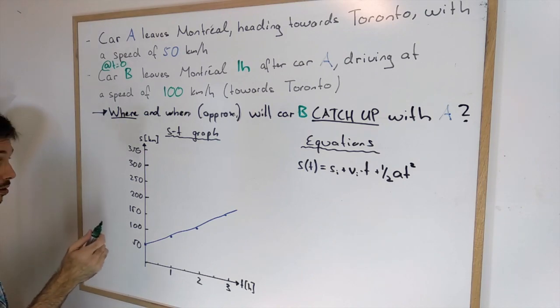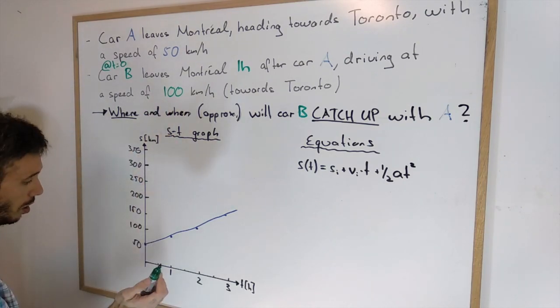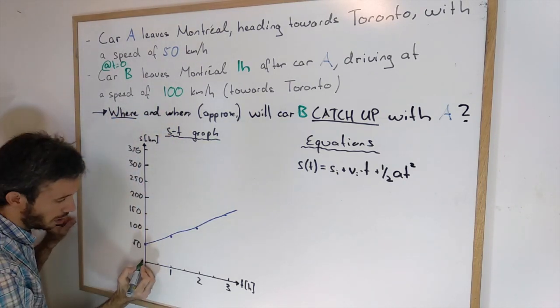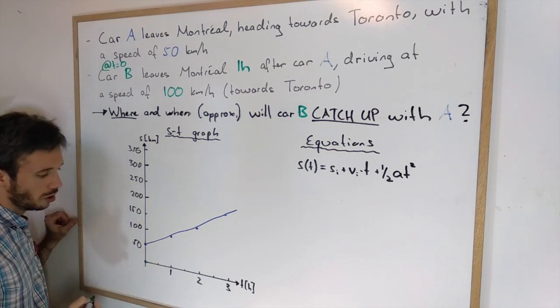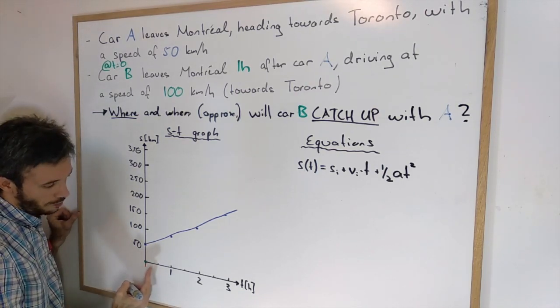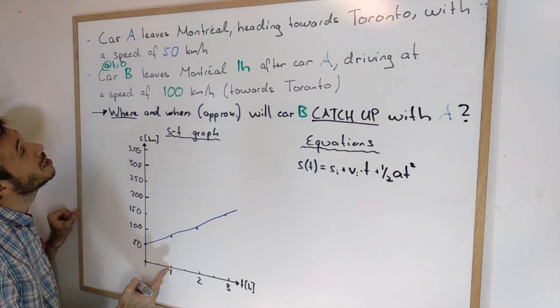Now let's have a look what B is doing. B is driving at 100 km an hour, and we say it's starting at t equals zero in Montreal at km zero. After one hour, where is B?